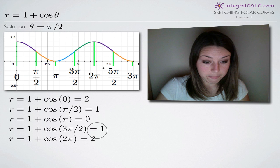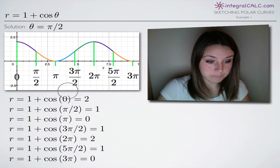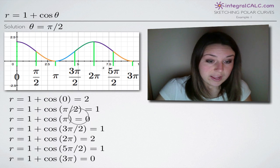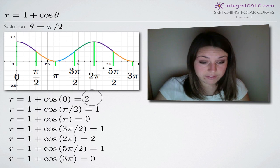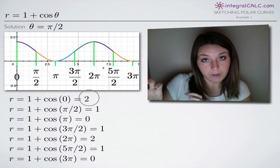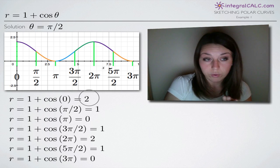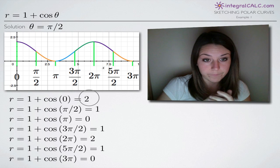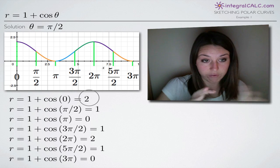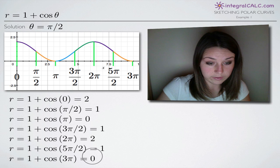We keep going, plugging in 2 pi, 5 pi over 2, and 3 pi into our original function and solving for r. So we end up with this set of values — 2, 1, 0, 1, 2, 1, 0 — which are going to be our r-coordinates on our polar coordinate system and y-coordinates on our rectangular system.